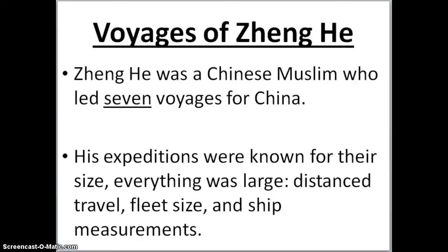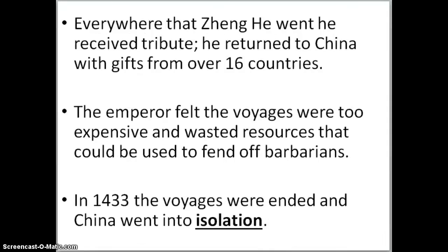A person we need to talk about is Zheng He. Zheng He is a Chinese Muslim. He is going to lead seven voyages for China. His expeditions were known for their size — they covered a great distance in travel, the fleet size was large, and the actual ship measurement itself was quite large. They are known as the treasure junks. Everywhere that Zheng He went, he is going to receive tribute and return to China with gifts from over 16 countries.